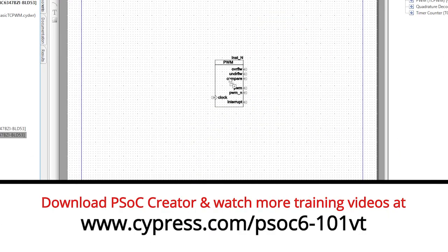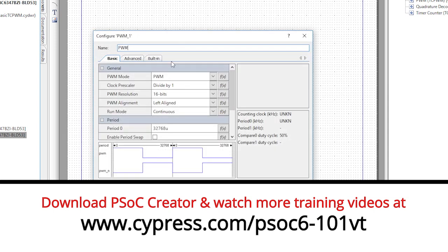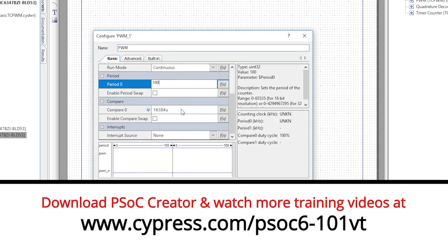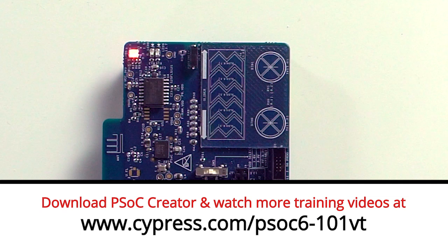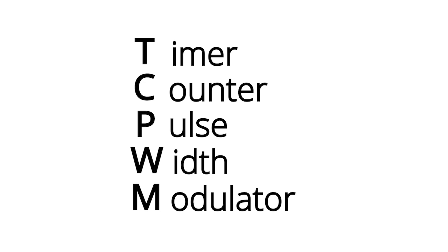Welcome back to Cypress Academy PSOC 6101. In this video, I will show you how to set up the PSOC PWMs, which we call TC PWMs, to control the servos in the robotic arm for our BLE-controlled robotic arm project. TC PWM stands for Timer Counter PWM because these blocks can be used for any of those functions. In this video, we'll just use them as PWMs. Alright, let's get started.